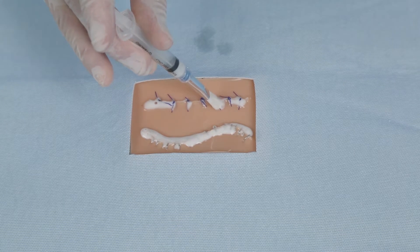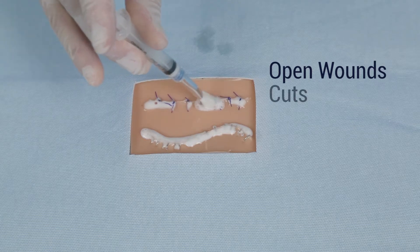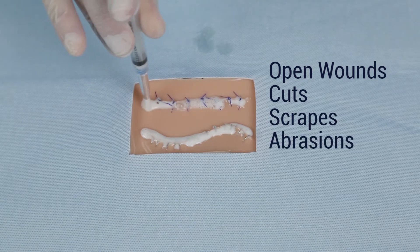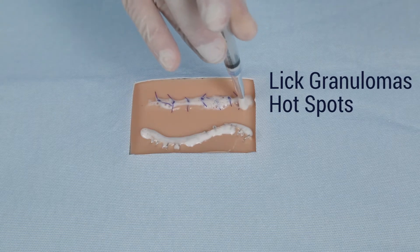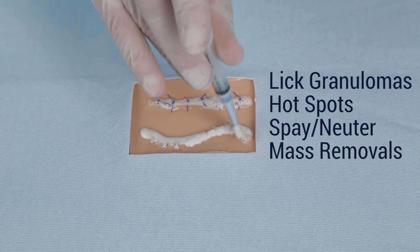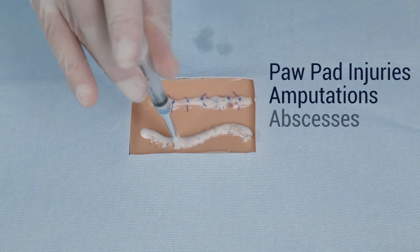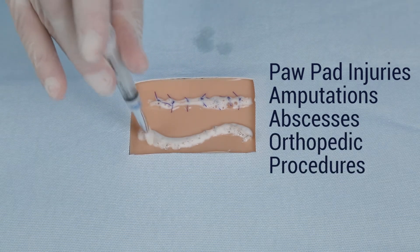Suture Seal is recommended for any open wounds, cuts, scrapes, abrasions, burns, lick granulomas, hot spots, and all surgical incisions including spay-neuter, mass removals, paw pad injuries, amputations, abscesses, and orthopedic procedures.